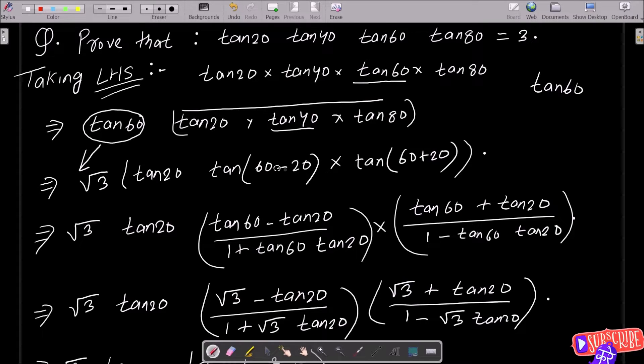Here you can apply tan40° we can write as tan(60° - 20°) and tan80° as tan(60° + 20°). After that, use the tan(A - B) formula, that is (tanA - tanB) divided by (1 + tanA tanB).